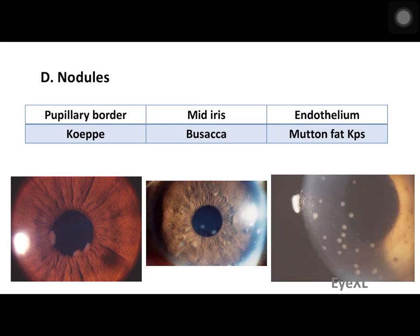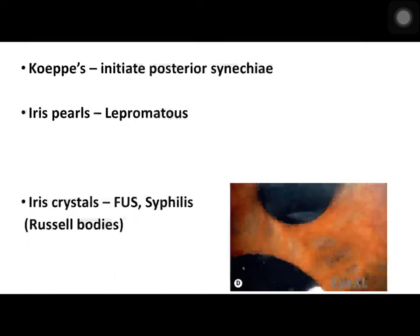Iris nodules: if nodules are at the pupillary border they are called Koeppe nodules; at the mid iris they are called Busacca nodules; and on the endothelium you get mutton fat keratic precipitates. Koeppe nodules at the pupillary margin initiate posterior synechiae by causing adhesions between the iris and the lens. Iris pearls are specific for lepromatous uveitis, whereas iris crystals — also known as Russell bodies — are seen in Fuchs uveitis syndrome and syphilitic uveitis.